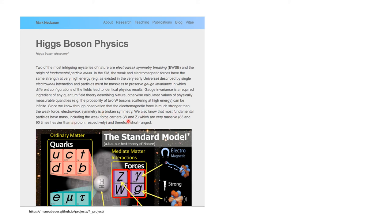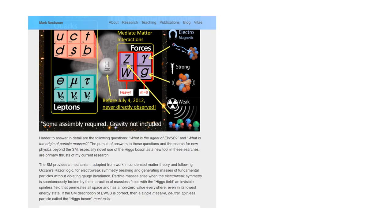So these two things had to exist to preserve gauge invariance. And again, gauge invariance is the thing in which different configurations of the fields lead to identical physical results. And again, gauge invariance is a required ingredient of any quantum field theory describing nature. And we now see that electroweak symmetry is broken. They are not any longer the same force. And we also know that the W and Z particles do have mass. They are not massless. And so how to solve these problems while maintaining gauge symmetry? Well, that is where the Higgs boson came in. And again, you can read this on your own. I don't want to just be sitting here reading things to you, but basically particle masses arise when the electroweak symmetry is spontaneously broken by the interaction of massless fields with the Higgs field, an invisible spinless field that permeates all space and has a non-zero value everywhere.